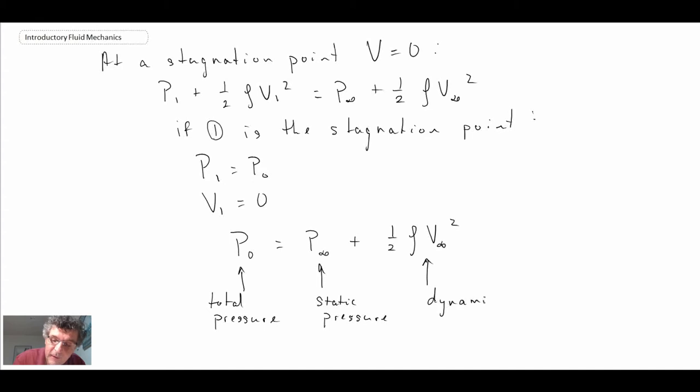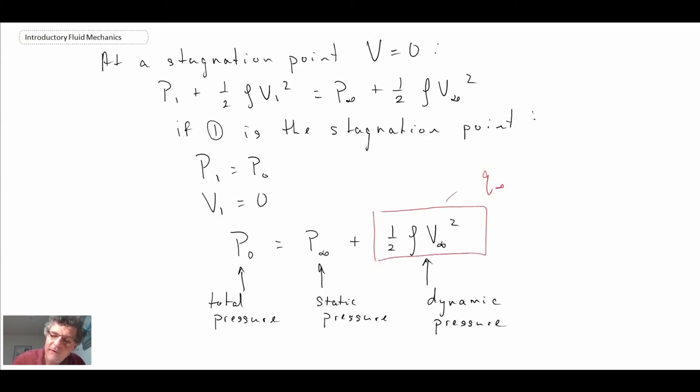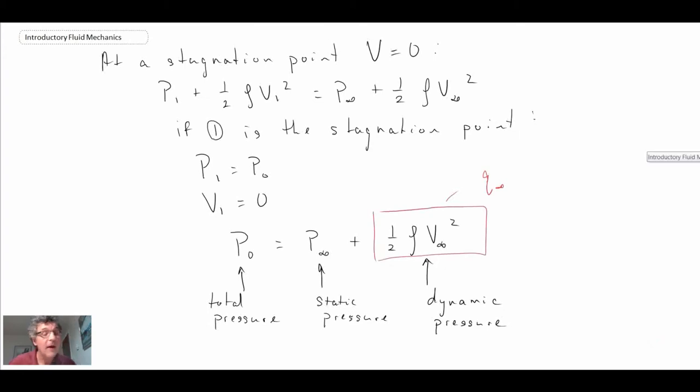If you're wondering where we get the one-half, it's coming out of Bernoulli's equation, and it just makes it easier when we do the scaling. This is the Q∞ that we saw in the previous slide. When we look at our pressure coefficient, we have dynamic pressure in the denominator, and it's coming out of Bernoulli's equation. So that is the pressure coefficient.